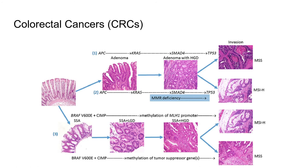When it comes to colorectal cancers, there are three major pathways. Number one, the conventional adenoma-carcinoma sequence with activation of oncogenes such as KRAS and inactivation of tumor suppressor genes such as APC and P53, resulting in a microsatellite stable, or MSS, cancer. The second pathway is the microsatellite instability, or MSI, pathway resulting from a mismatch repair enzyme deficiency — such as that seen in Lynch syndrome — resulting in MSI-high cancers. The serrated pathway with CpG island methylation, resulting in either MSI-high or MSS cancers depending on whether methylation occurs in a microsatellite promoter or a tumor suppressor gene, respectively.